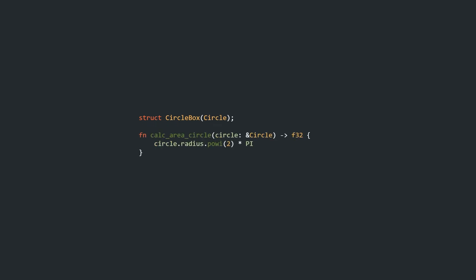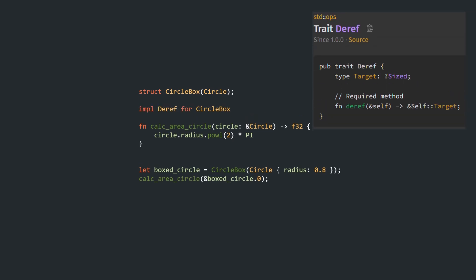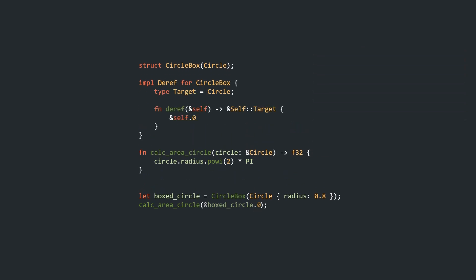Moving on to our last trait today: Deref. The main use case for the Deref trait is for more ergonomic use of boxed values. Let's set out with a very simple CircleBox. Our functionality is designed to work on Circles directly, which makes working with a boxed Circle rather cumbersome, as we always explicitly need to access the wrapped Circle. When implementing Deref, we have to define the associated target type as well as the deref function. Once completed, we can now use a boxed Circle in places where a normal Circle reference is expected. The Deref trait works from the shadows — the deref function is automatically called when the compiler sees that the conversion from a CircleBox to a Circle reference is required, making our lives a lot easier.